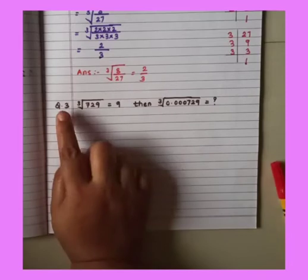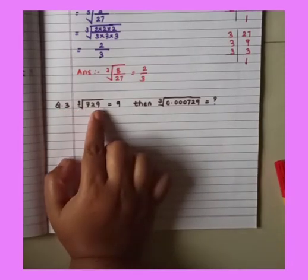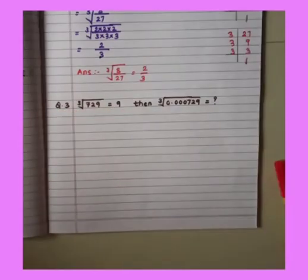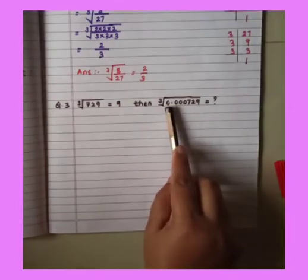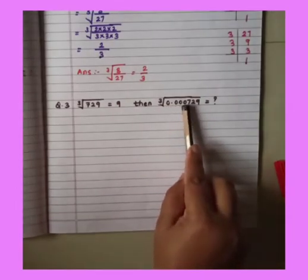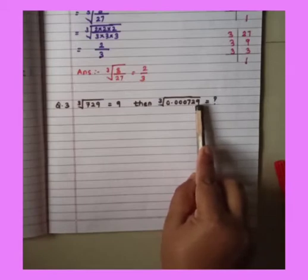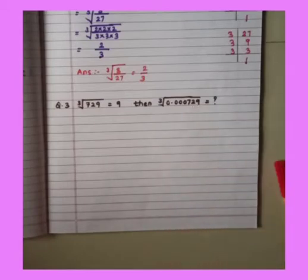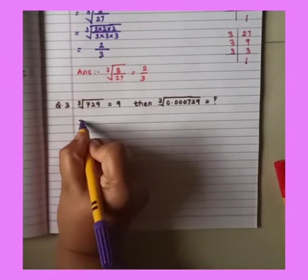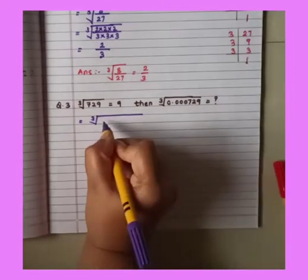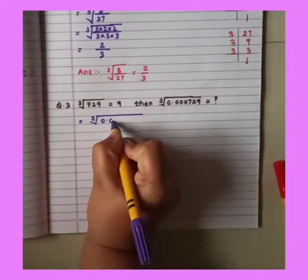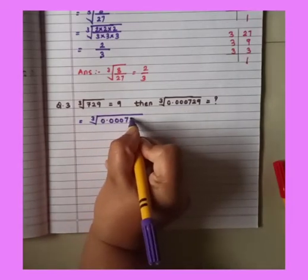They said here cube root of 729 is 9. Then find out the cube root of 0.000729. Okay, that means here we have to find out the factors of cube root of 0.000729.